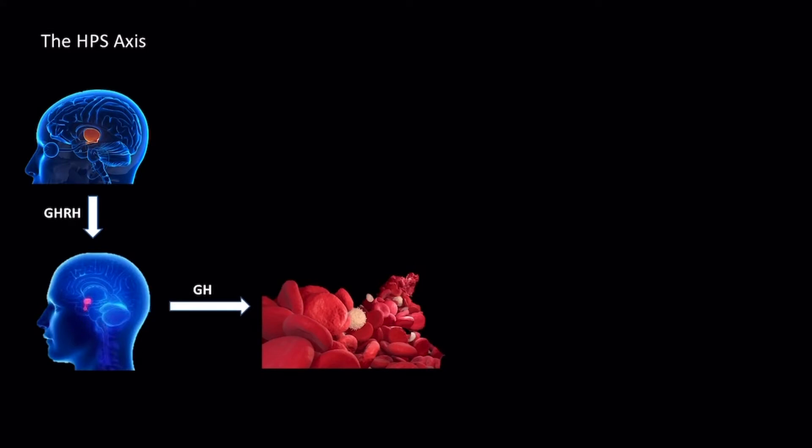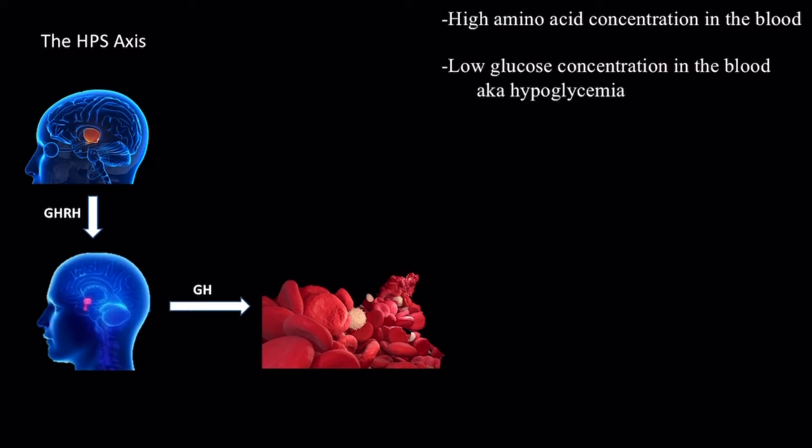To gain a good understanding of the importance of the HPS axis and the roles of the hormones involved, it is helpful to know what stimulates the release of GHRH, thus initiating the HPS axis. The hypothalamus is stimulated to release GHRH under various nutritional states, such as when there is a high amino acid concentration in the blood, low glucose concentration in the blood (hypoglycemia), or low fatty acid concentration in the blood (hypolipidemia).